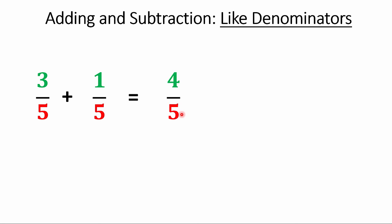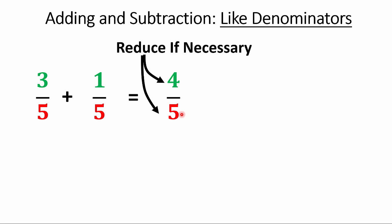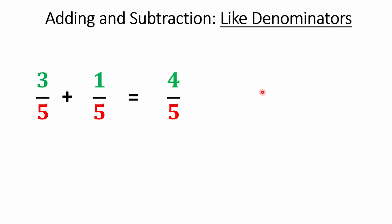You get four-fifths. Don't say 'four over five' — say 'four-fifths.' That's the answer and we leave it there. Now ask yourself: can you reduce? There's nothing that divides into both, so we move on. I also wrote down four-tenths — that's not the right answer, that's a common error. People will add both the numerators and the denominators and get the wrong answer. Don't do that. It's wrong.